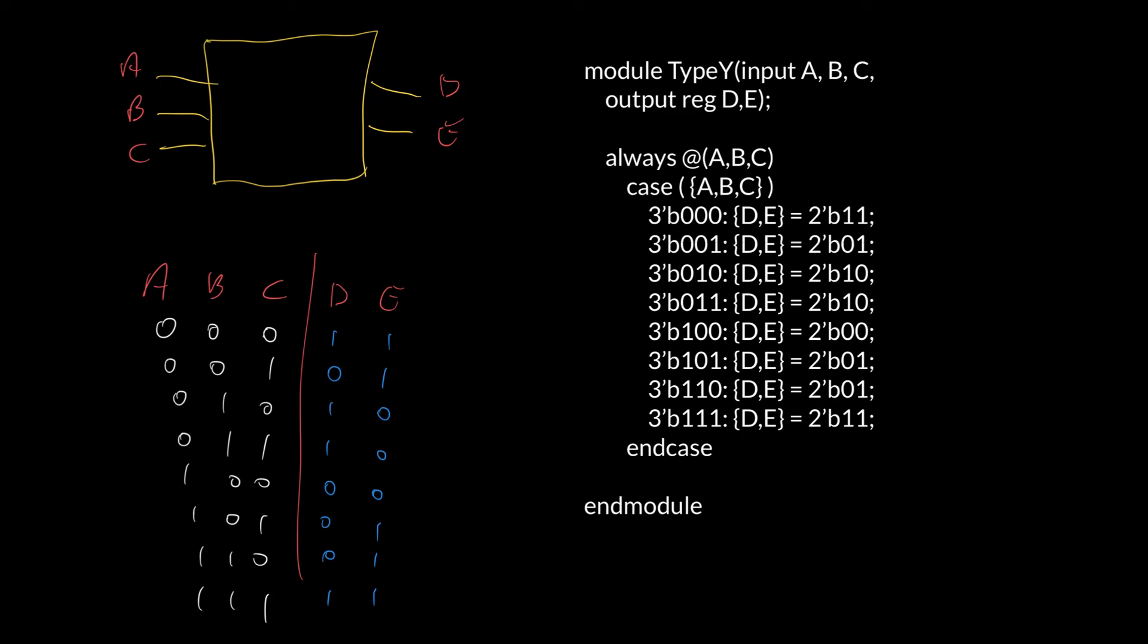Now, it's very important when you have a case statement that all the cases are listed here. We will explain this in later lectures in more detail but our outputs D and E they have to be continuously assigned to something. If we miss a case statement here then what can happen is that A, B and C change their value but because we haven't listed a particular entry here we forgot it.